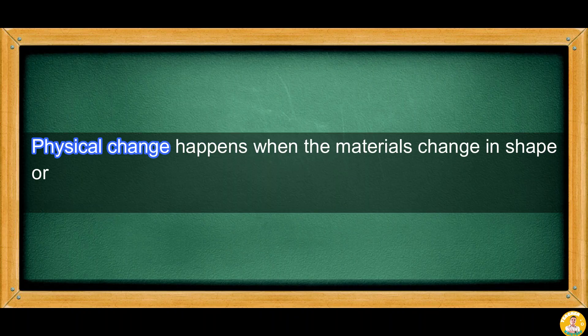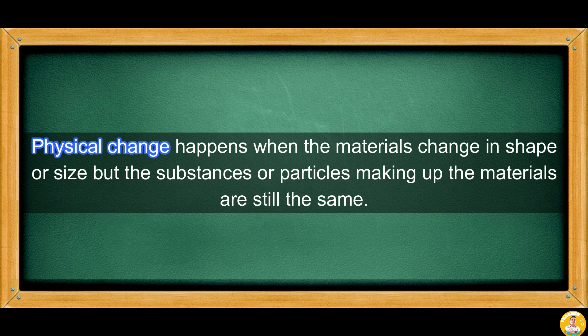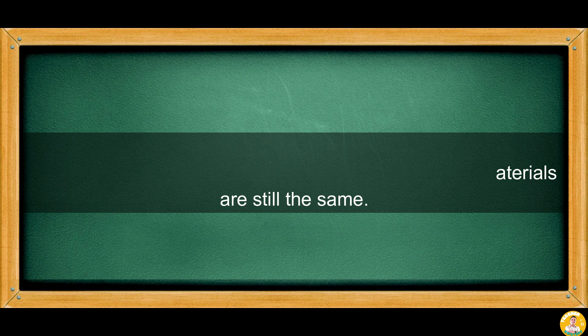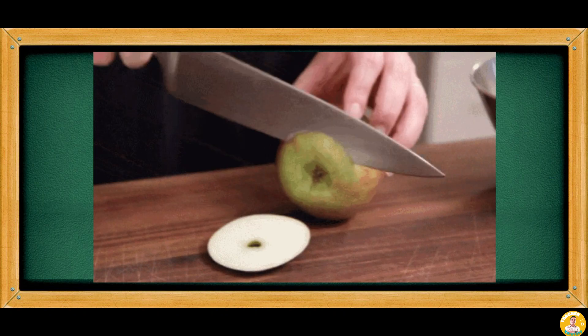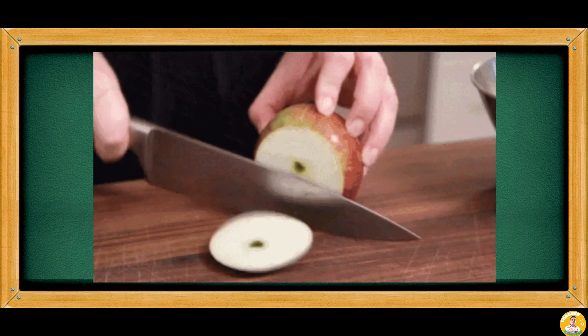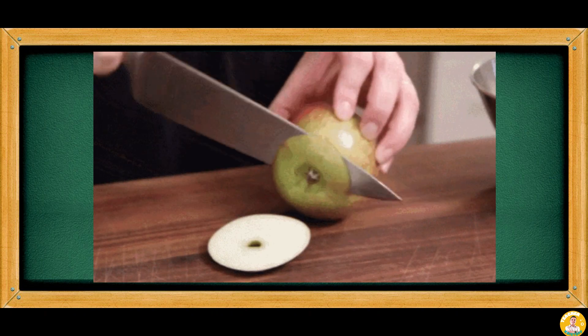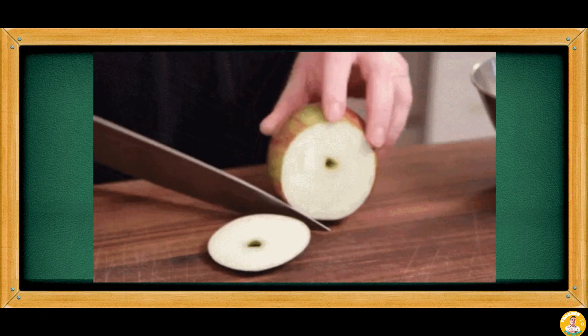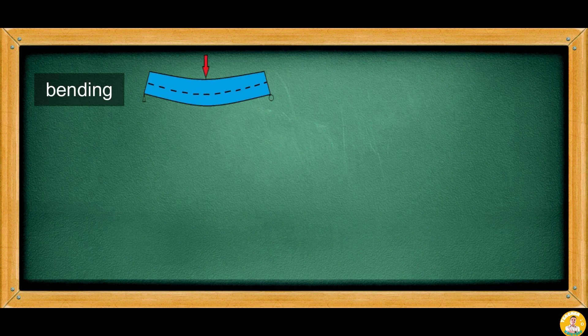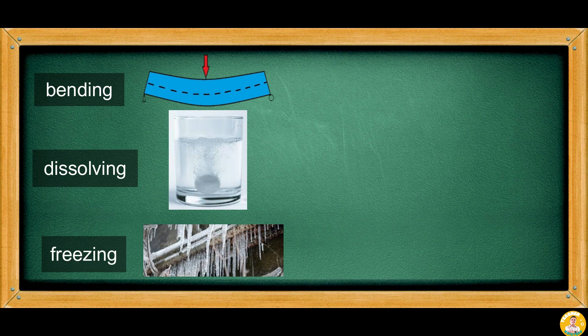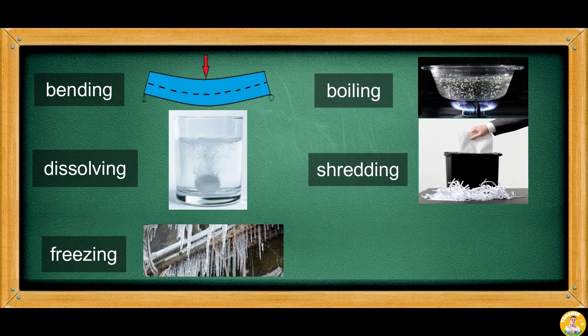Physical change happens when materials change in shape or size, but the substances or particles making up the materials are still the same. These changes are directly observed, like when you cut or slice an apple — there are changes in shape and size, but the material is still the same. Other processes that cause physical changes include bending, dissolving, freezing, boiling, shredding, and melting.